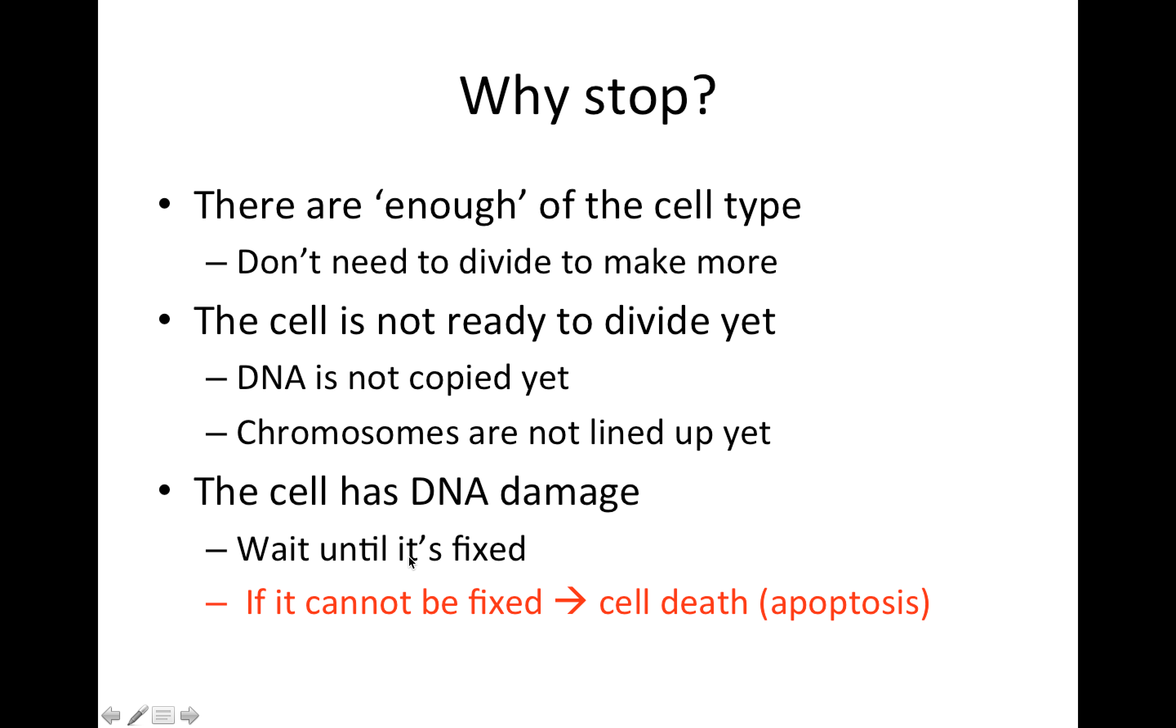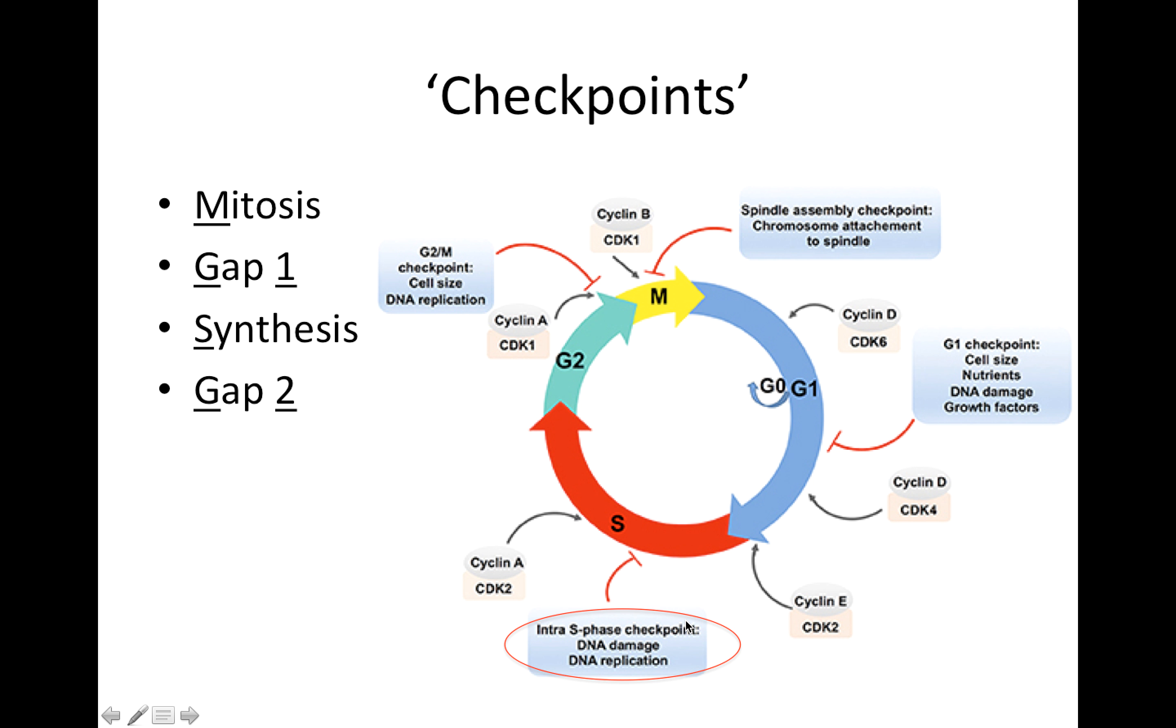And one thing we won't be talking about so much in this lecture, but I want to point out, is we also want another kind of stop. One kind of stop is just don't do anything, wait until it's fixed. But another stop can be if the cell is so damaged that we want the cell to undergo death so that it won't cause further problems.